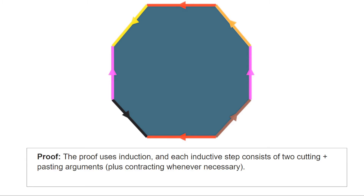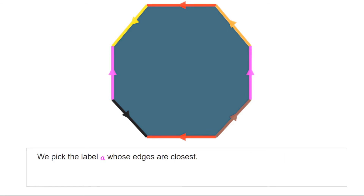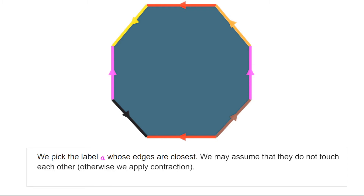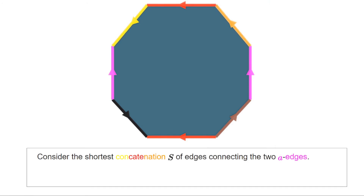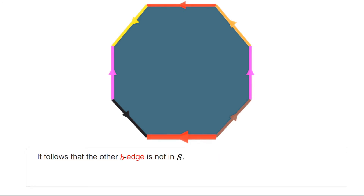Each step of the proof works as follows. We find the color A such that the corresponding edges are closest to each other — if they are already adjacent, orientability forces them to have opposite orientations and we apply contraction. In the animation, the closest color is pink, which we call A. There are two components in the complement of the A edges; we call S the shortest one, depicted in orange, red, and yellow. Since the A edges were closest, any edge in S has its same-color copy outside S.